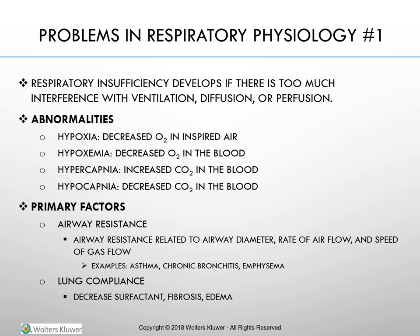Airway resistance is related to airway diameter, rate of airflow, and speed of gas flow. As the rate of breathing increases, so does the resistance. A narrowed airway results from increased or thick mucus, bronchospasm, or edema. Conditions affecting bronchial diameter include contraction of bronchial smooth muscle (asthma), thickening of bronchial mucosa (chronic bronchitis), airway obstruction by mucus, tumor, or foreign body, and loss of lung elasticity.